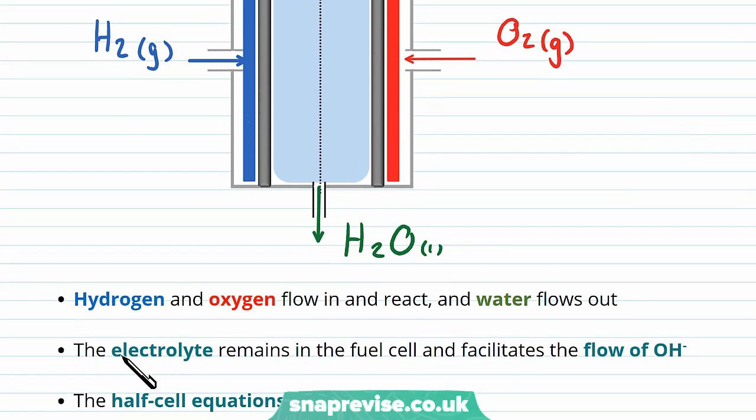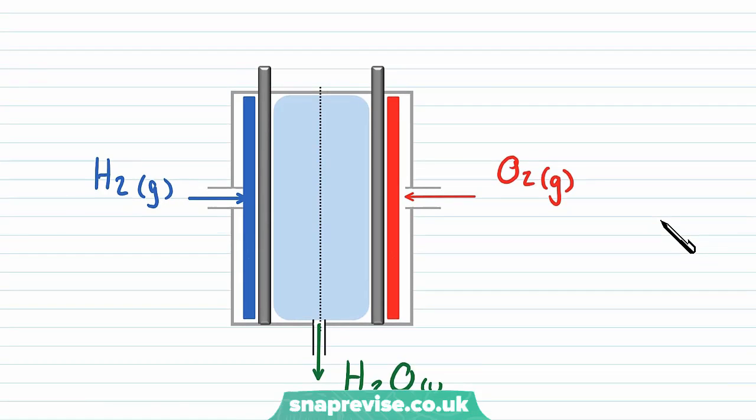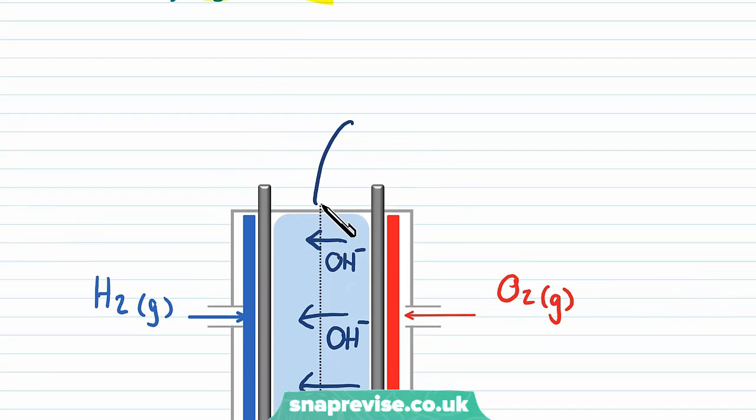We have an electrolyte. This is something that can carry charge that connects the two. It connects the two in an alkaline fuel cell by facilitating the flow of OH- ions from the oxygen end of the fuel cell towards the hydrogen end. And it's because this material we fill it with, the electrolyte,